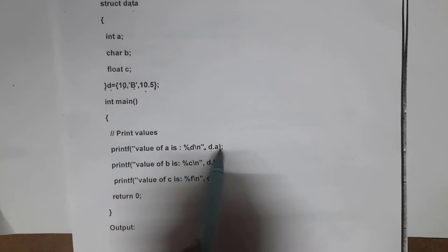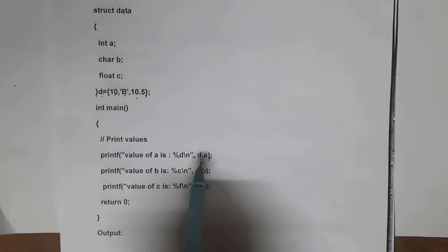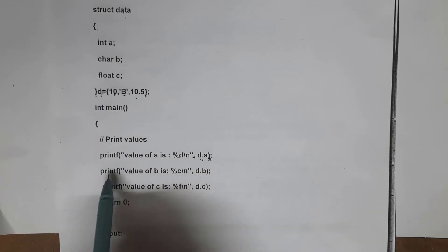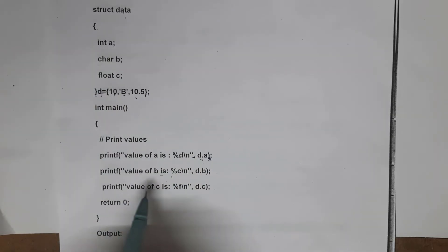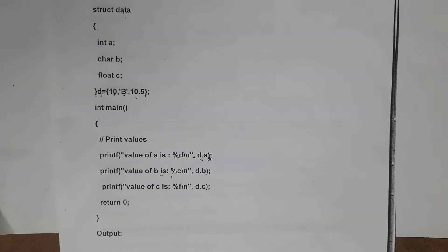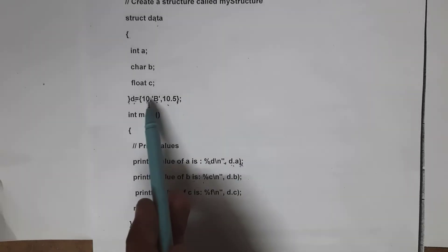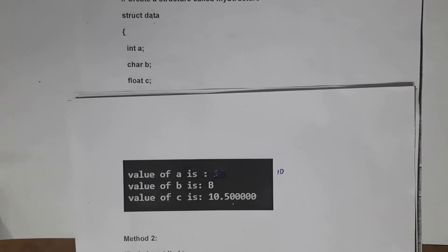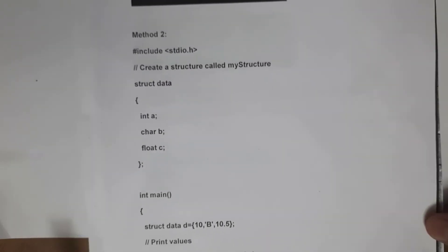Inside main, I write printf("value of a is %d", d.a), printf("value of b is %c", d.b), and printf("value of c is %f", d.c). Notice we write 'd.a' instead of just 'a' — this means the value of 'a' which is stored in 'd'. The output will be: value of a is 10, value of b is b, value of c is 10.5. This is the first way of assigning values to a structure.